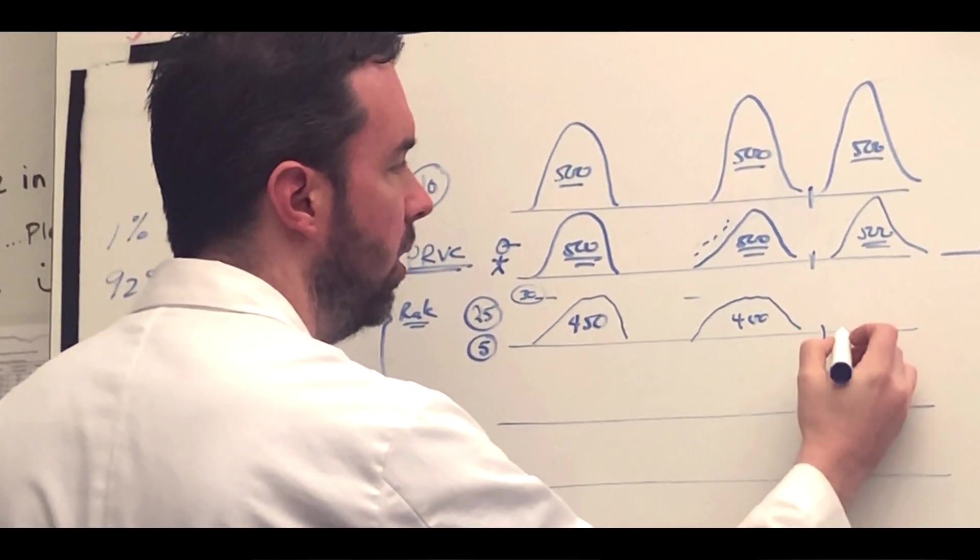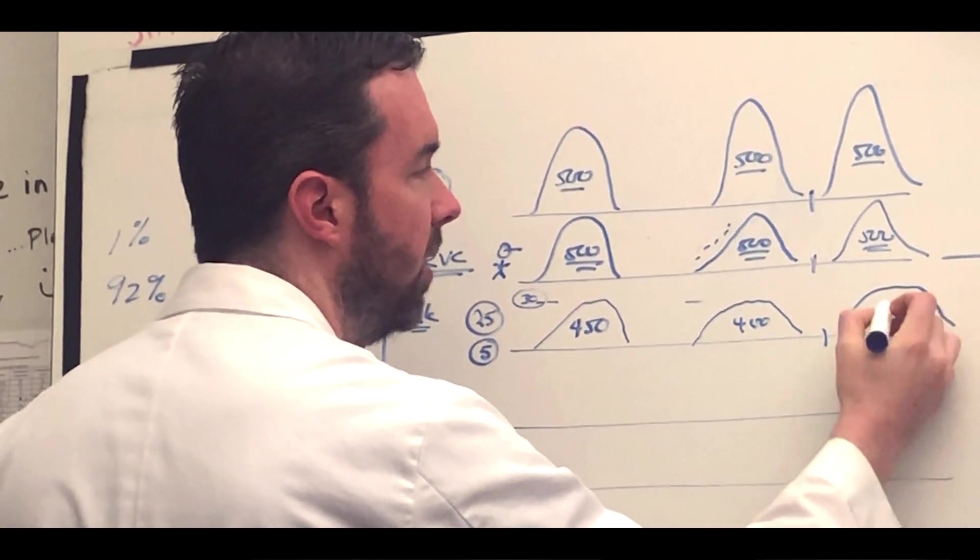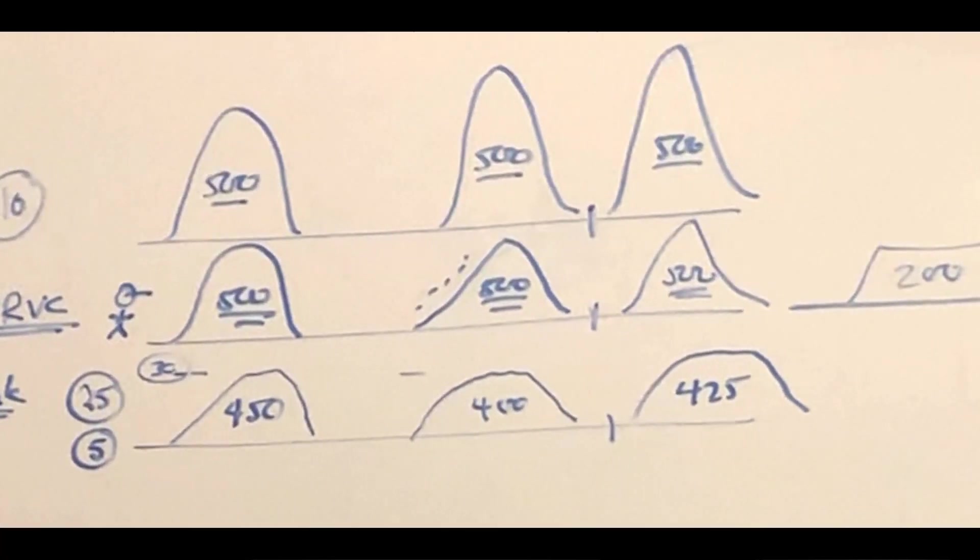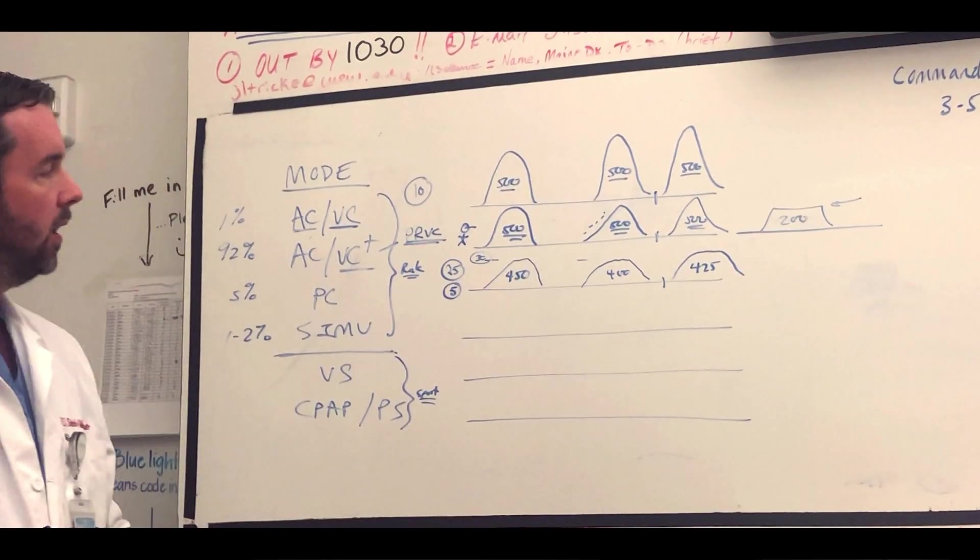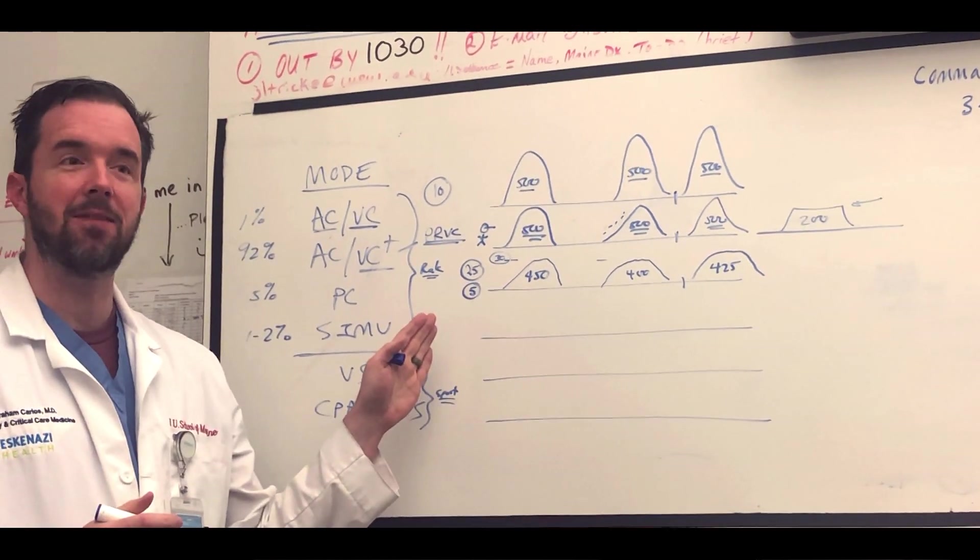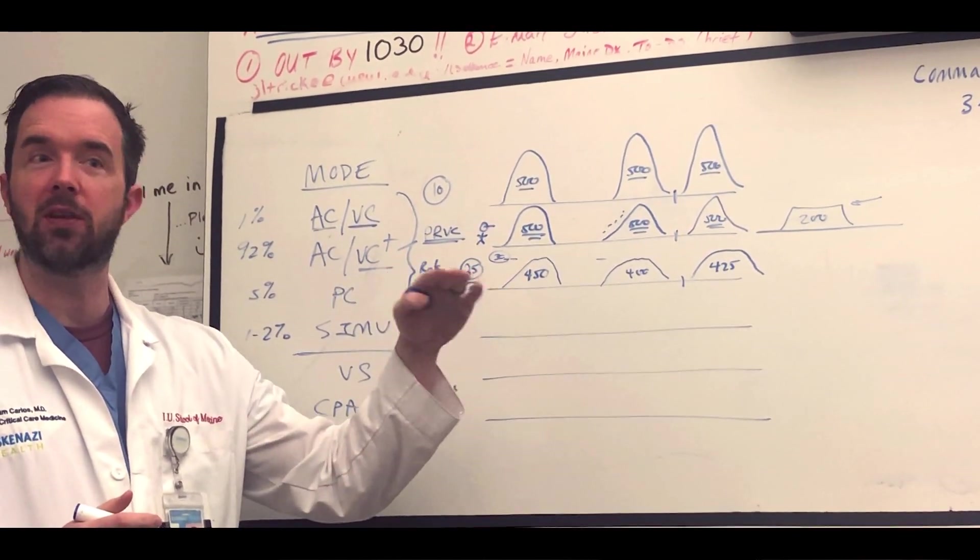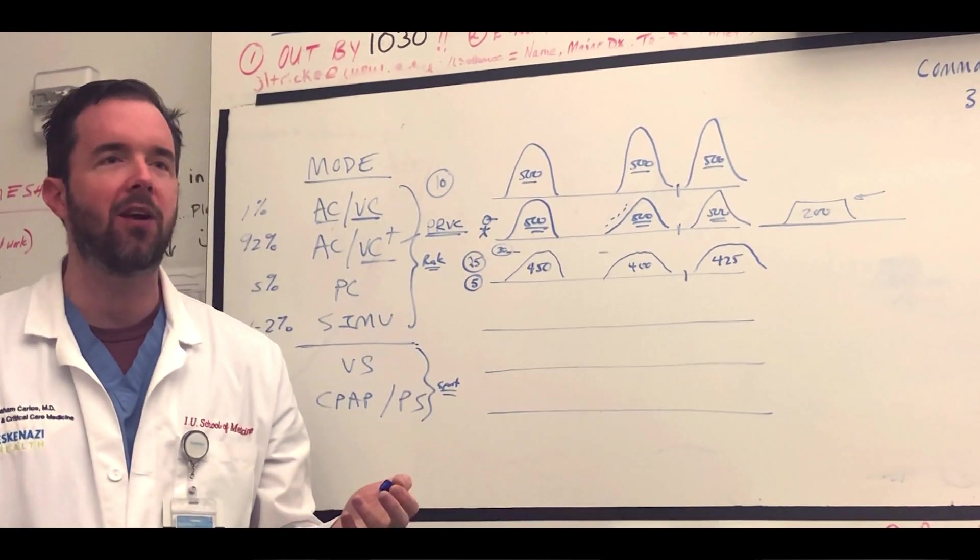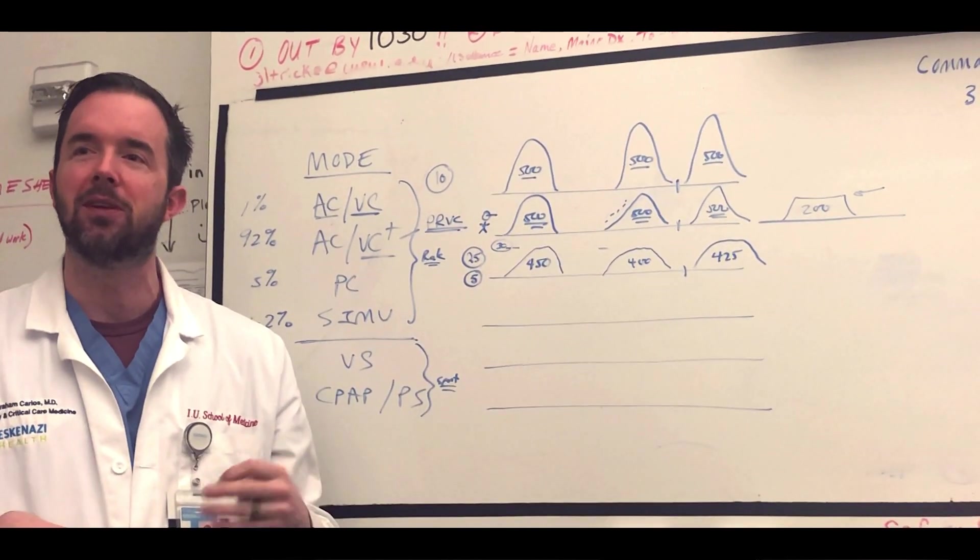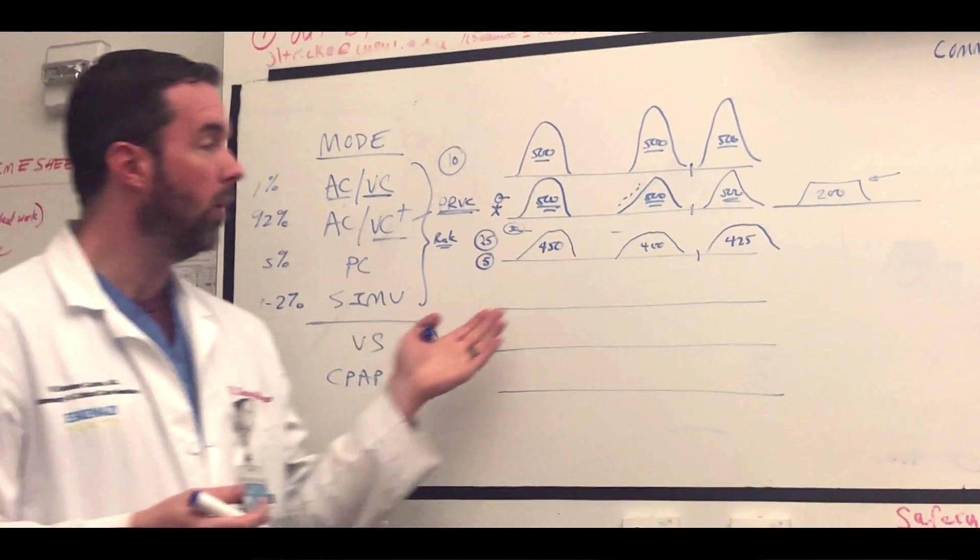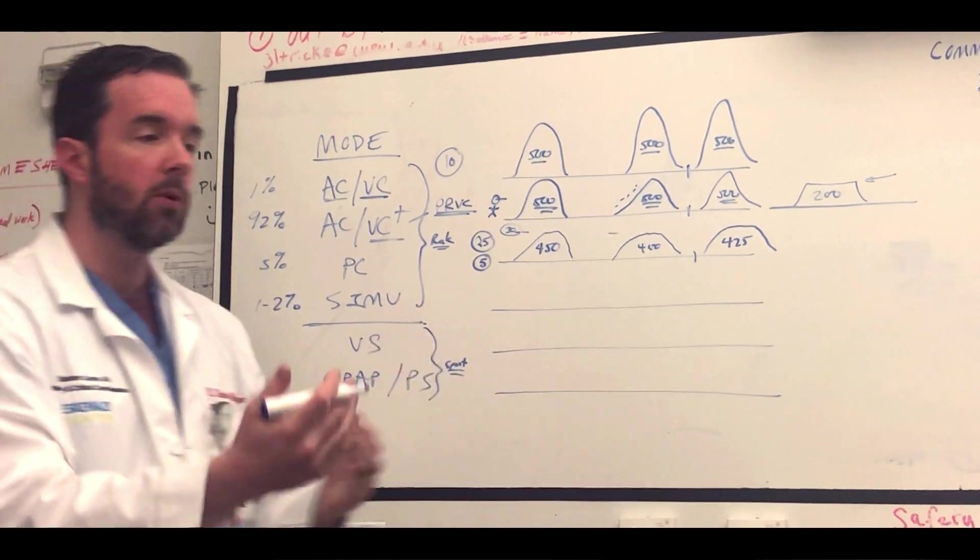Just like the other modes, when they take a breath above the set rate, they're going to get what they can. They're going to get a breath. In pressure control, the pressure on the vent, the peak pressure, will stay the same. It's going to read 30 the whole time. That's nice because we guarantee that we achieve one of our goals in ARDS: keeping the plateau less than 30.